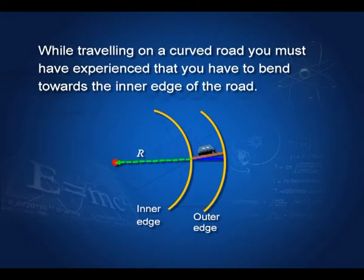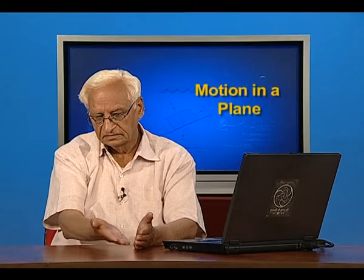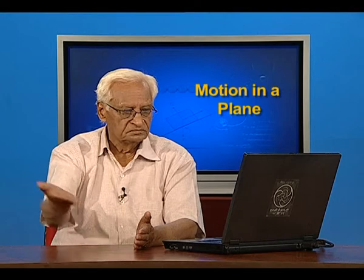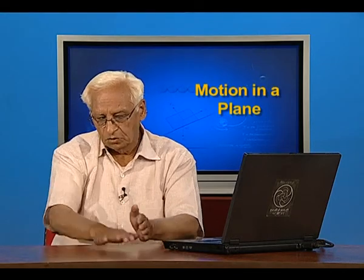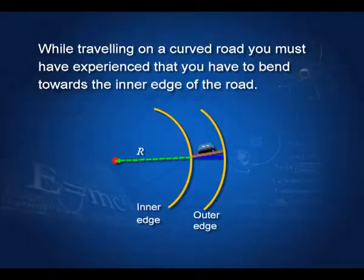While traveling on a curved road you have to bend towards the inner edge. To facilitate this, the outer edge of the road is built slightly higher than the inner edge — this is called the banking of roads. The road is shaped at an angle, and I have shown here how the road is banked and how the car sits on that banked road.